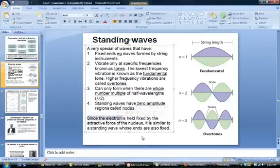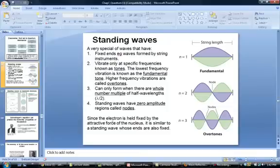Let's first talk about why standing wave is a good model for the electron. Remember what we said earlier. The electron is a particle that's held fixed by the attractive force of the nucleus. So in other words the electron doesn't just travel away from the atom but it stays fixed inside the atom because the nucleus is holding on to it. Standing wave is really a good model for it because a standing wave is a wave whose ends are also fixed.